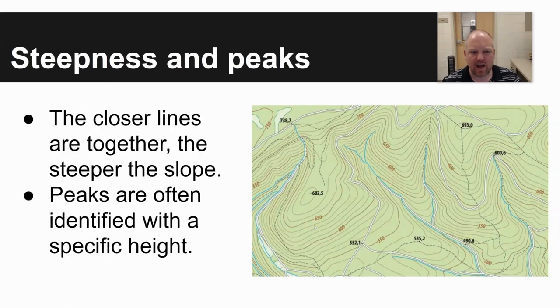Steepness and peaks. The closer lines are on a topo map, the steeper the slope. And the further apart they are, the less steep a slope, the shallower slope. Peaks are sometimes identified with a specific height.